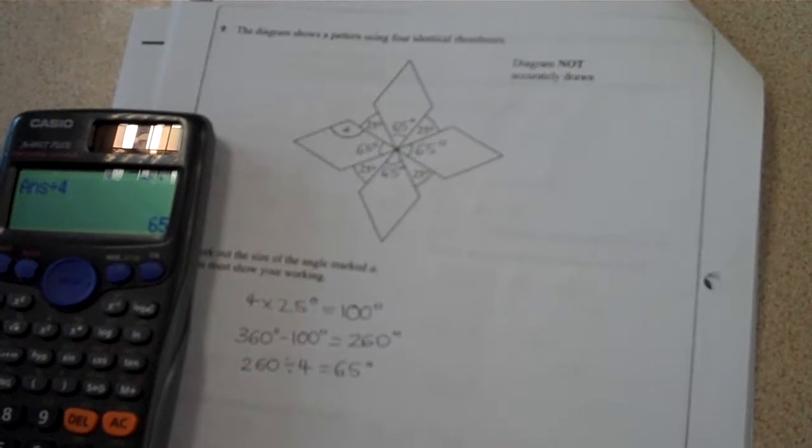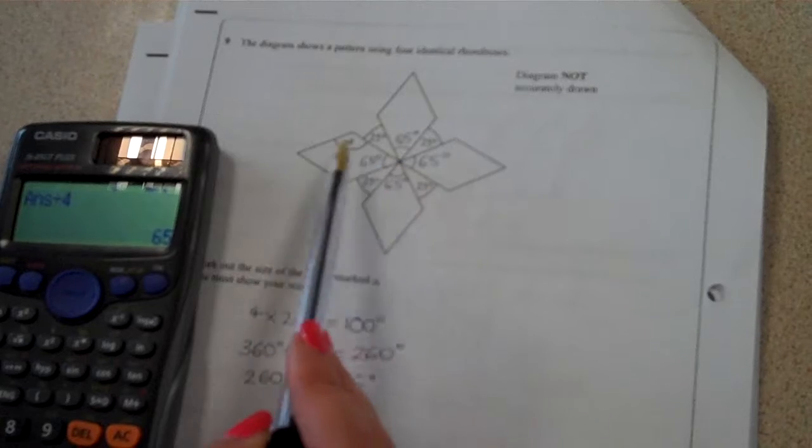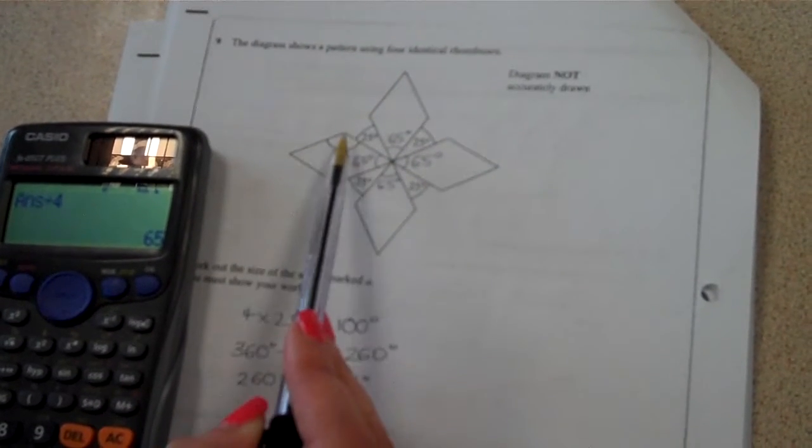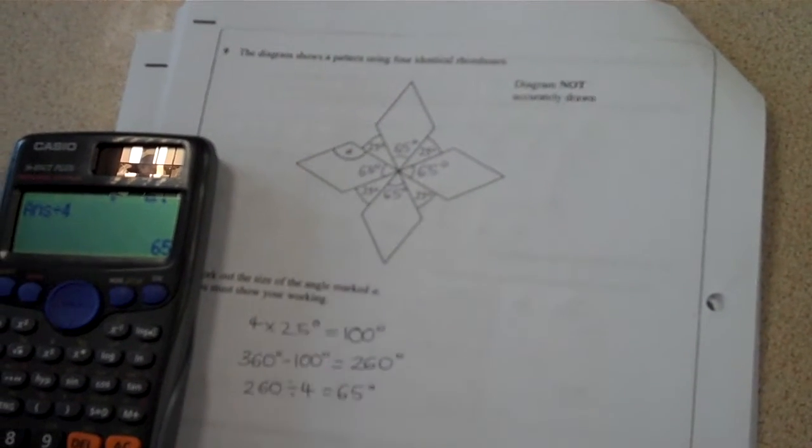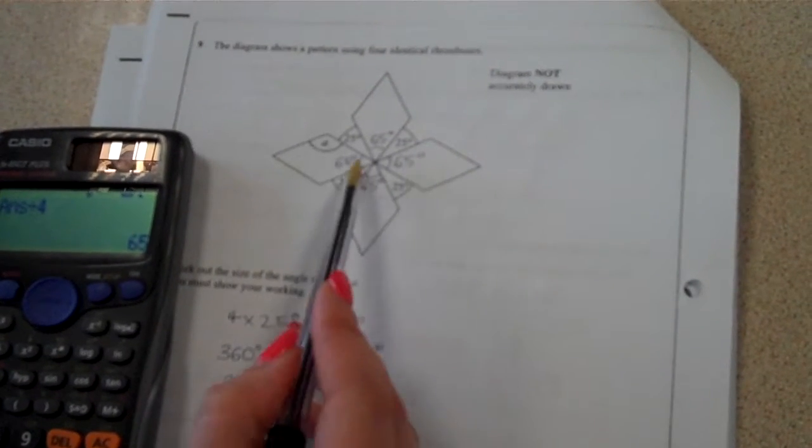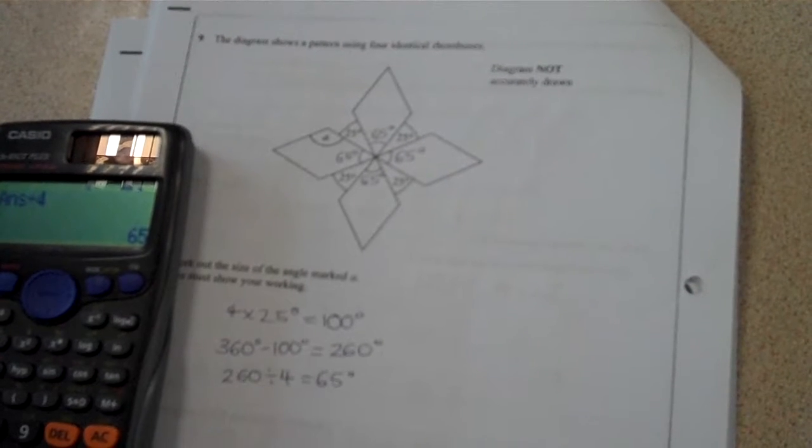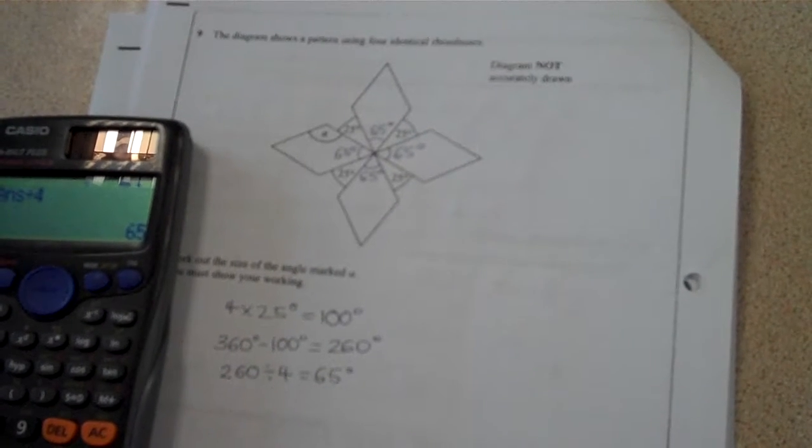So following on from that, looking at a rhombus and knowing about a rhombus's properties, we should know that these two angles are the same and these two angles are the same. So if I know that they all add up to 360 and that I've got these matching pairs of angles, I should be now at a point where I can work out what my missing angle is.